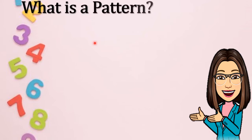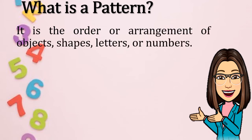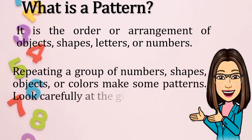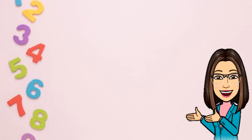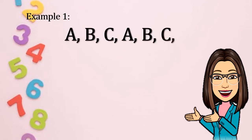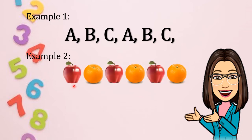Now, what is the pattern? It is the order or arrangement of objects, shapes, letters, or numbers. Repeating a group of numbers, shapes, objects, or colors make some patterns. Look carefully at the given patterns. Example number one: A, B, C, A, B, C. Example number two: apple, orange, apple, orange, apple, and orange. Example number three: two prisms, one pyramid, two prisms, and one pyramid.